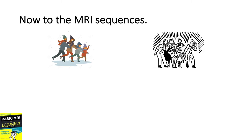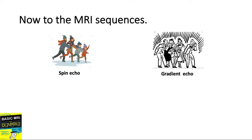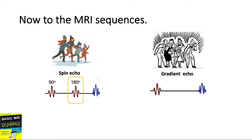There are two main types or families of MRI sequences. The other sequences are just variations of these two. These two families are the spin echo and the gradient echo. They differ in how they produce the echo. For the spin echo, the echo is produced using a 180-degree refocusing pulse. For the gradient echo, notice that there is no 180-degree refocusing pulse.